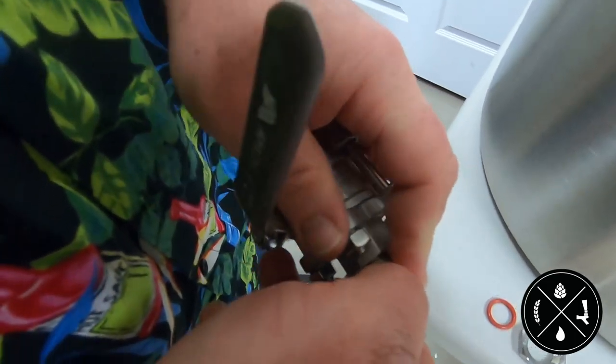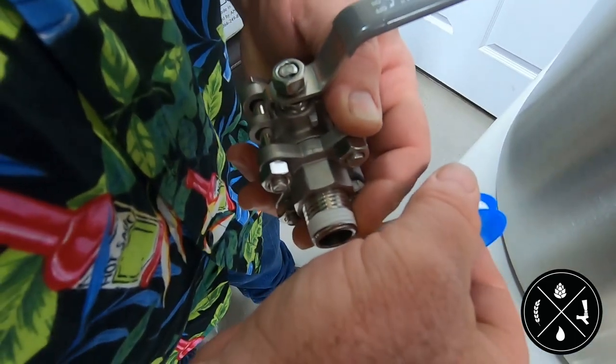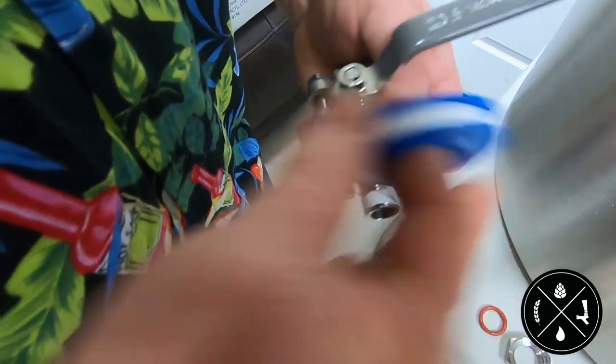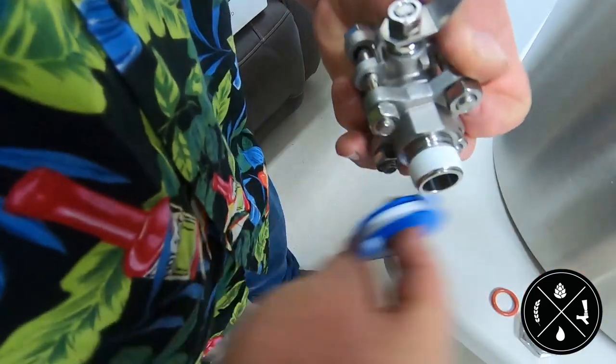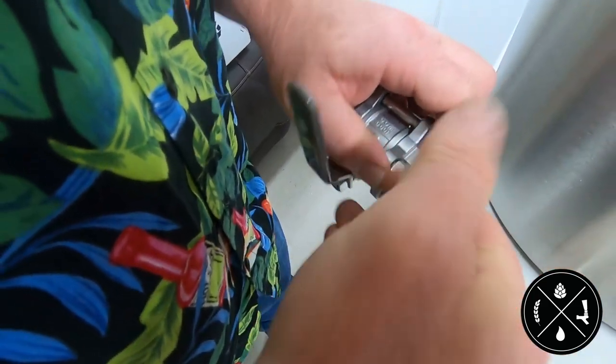Apply Teflon tape to one side of the threads, the side that will be outside the kettle, on the included threaded nipple. Use five to six full rotations of tape on the threads to ensure a leak-proof seal.